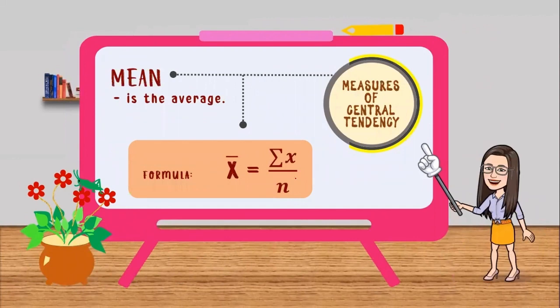As we can recall, mean is the average. In solving the mean, we need to follow a certain formula. We have x bar is equal to summation of x over n. What do these notations mean?